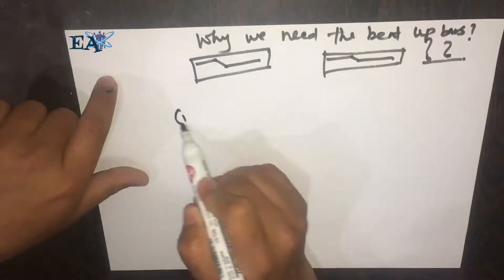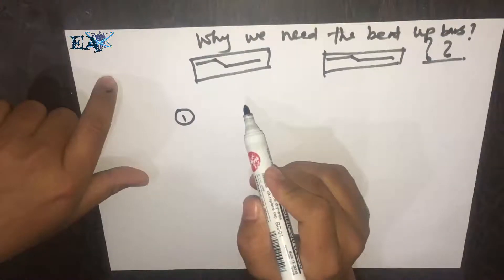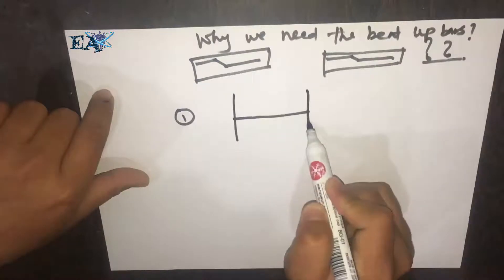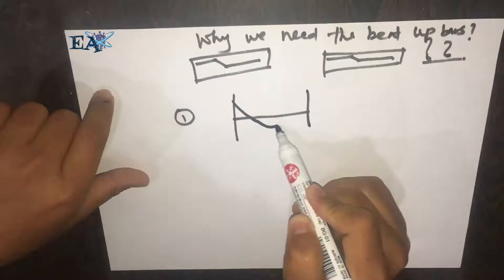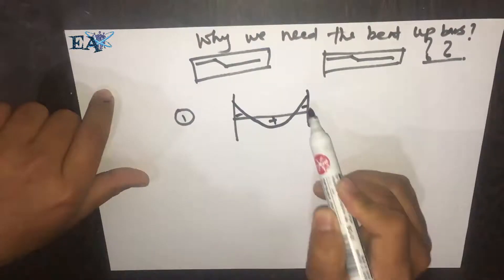The first one is, if we see the bending moment diagram of any fixed supported beam, it's a beam and it's fixed supported, we'll see that bending moment varies just like this. Here we have a negative moment, here positive, and here again negative moment.